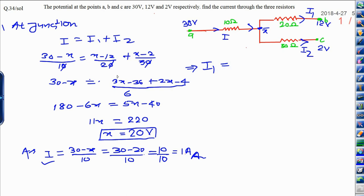I1 is equal to X minus 12 divided by 20. Let us see what is X here, X is 20 we already calculated. 20 minus 12 divided by 20 and finally answer will be 8 upon 20, that will be 4 upon 10, and finally answer will be 0.4 ampere. This is the second part.